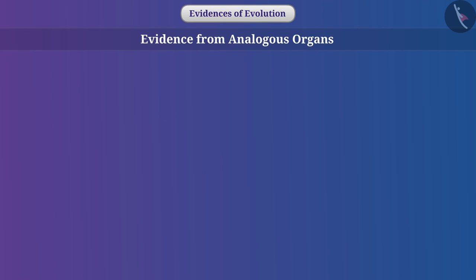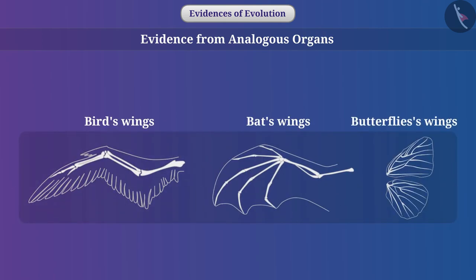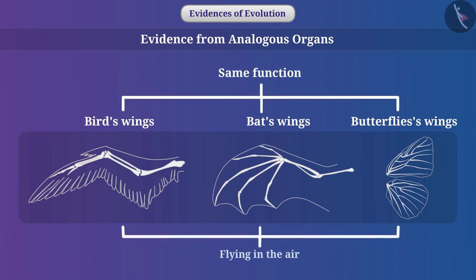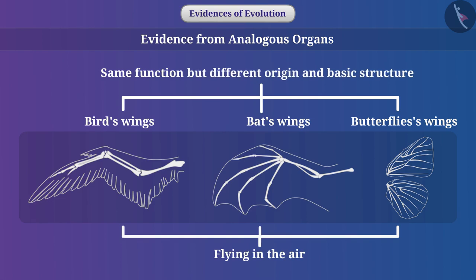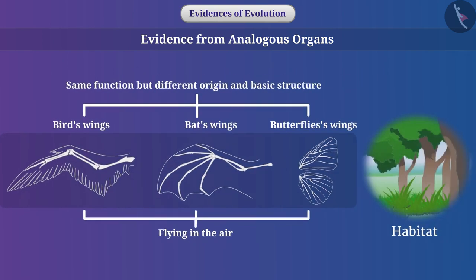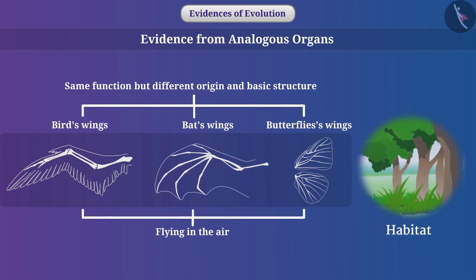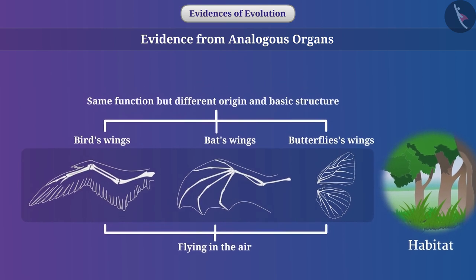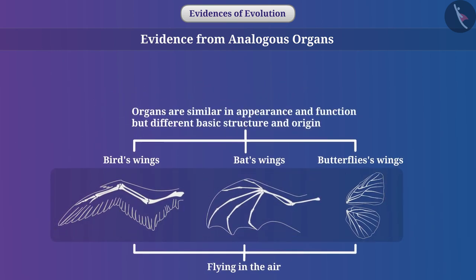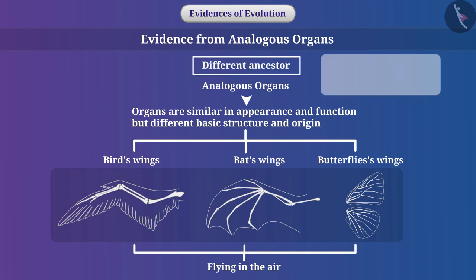Evidence from analogous organs: In birds, bats and butterflies, wings have the same function — that is, flying in the air — but their origin and basic structure are different. When different groups of organisms have the same habitat, they develop similar structures in appearance and action, which gives them a survival advantage. If organs are similar in appearance and function but their basic structure and origin are different, they are called analogous organs. Analogous structures provide evidence of a different ancestor. Are sweet potato and potato also analogous to each other? Try to find the answer by yourself.